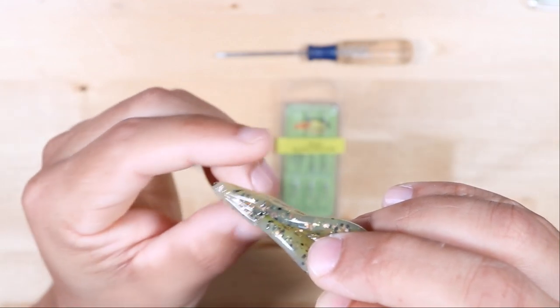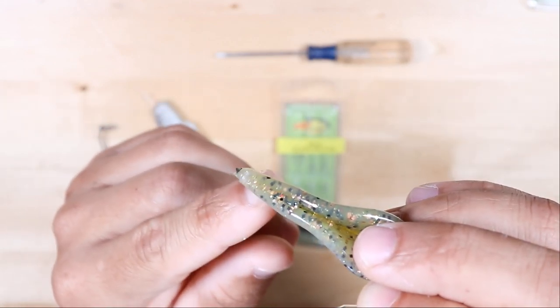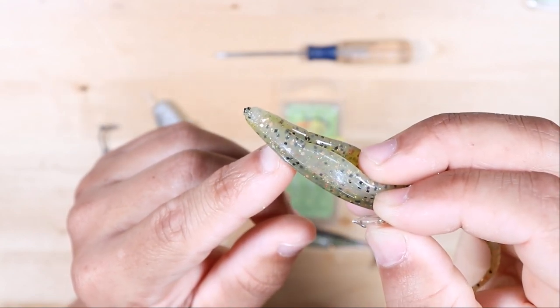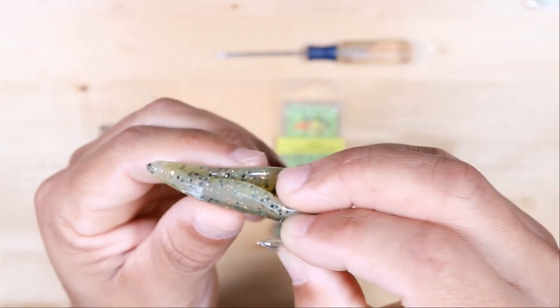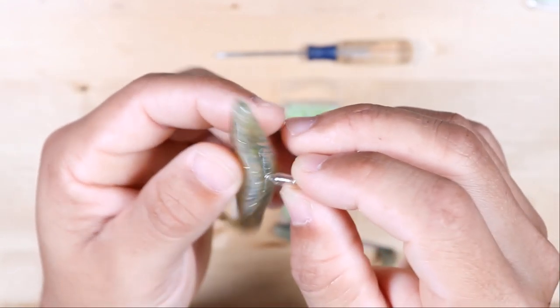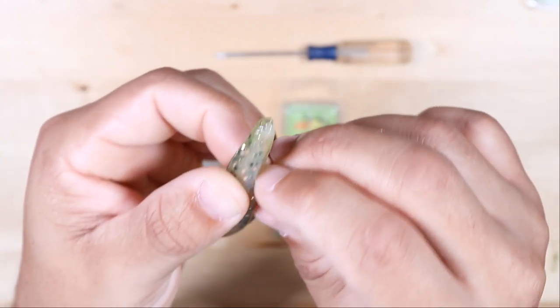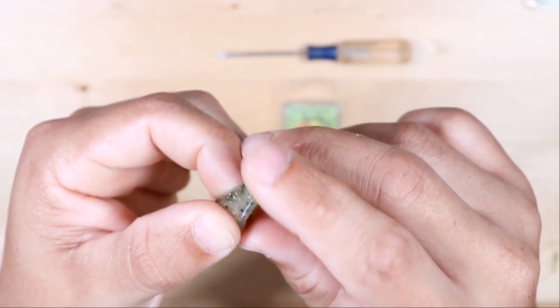Closer to the top of the head, if you can get it in there, is even better. Put it in at an angle. All you have to do with these baits is just put that pointy end into the lure and just start pushing it into the head.